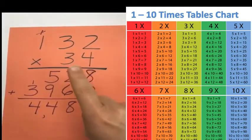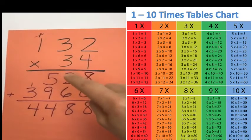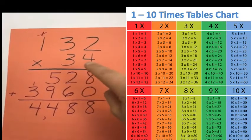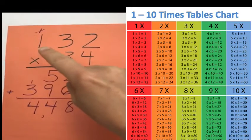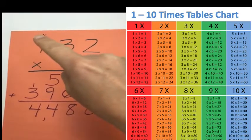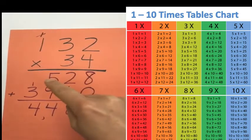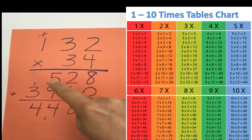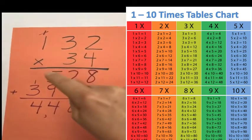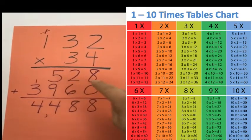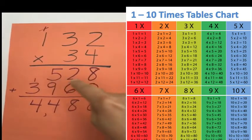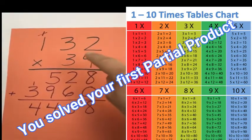I can only write one digit at a time, so I write the two from twelve. Then I do four times one, which is four, and then I have to add that carried one to it, which equals five. So five hundred twenty is my first row of answers — I got those answers from the four.